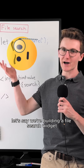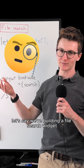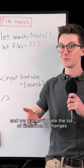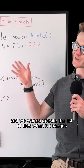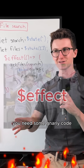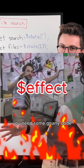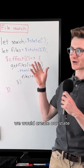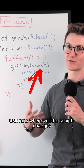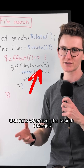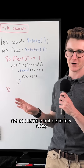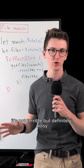Let's say we're building a file search widget, where we have an input query tracked as state, and we want to update the list of files when it changes. If it's async, you need some gnarly code. We would create our state, and then write an effect that runs whenever the search changes to get the files and reassign it. It's not terrible, but definitely noisy.